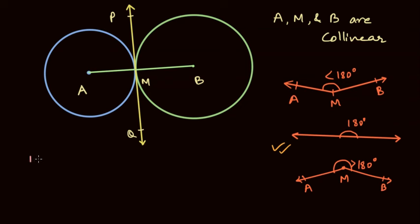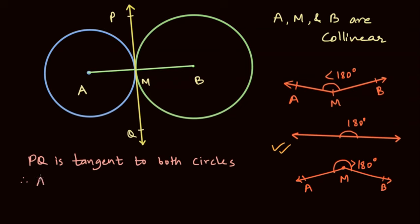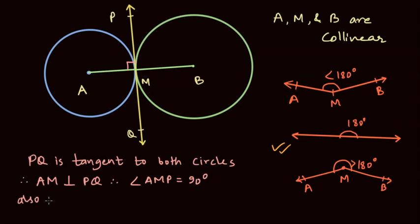We will now write that PQ is tangent to both circles. Therefore, from the property that the radius is always perpendicular to the tangent, we can say that AM is perpendicular to PQ, and therefore angle AMP is equal to 90 degrees. Also, BM is perpendicular to PQ, and therefore angle BMP is also equal to 90 degrees.